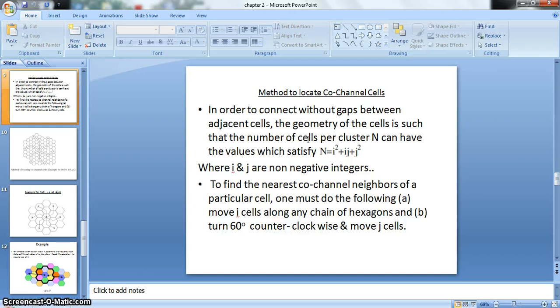In order to connect without gaps between adjacent cells, the geometry of the cell is such that the number of cells per cluster N can have values which satisfy N equals i squared plus ij plus j squared, where i and j are non-negative integers. To find the nearest co-channel neighbors of a particular cell, one must do the following: move i cells along any chain of hexagons, then turn 60 degrees counter-clockwise and move j cells. So let us see with an example.